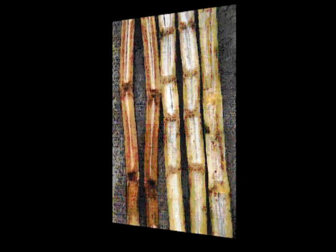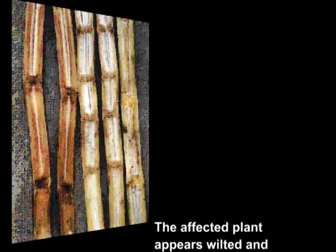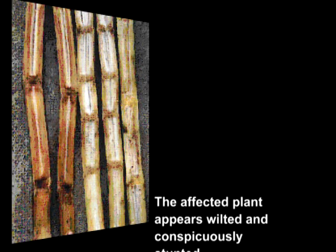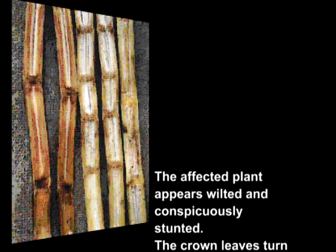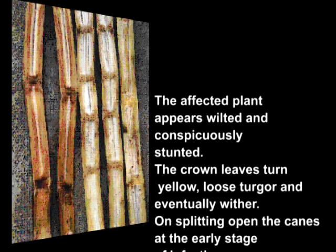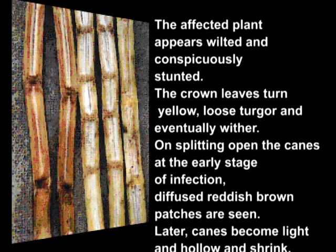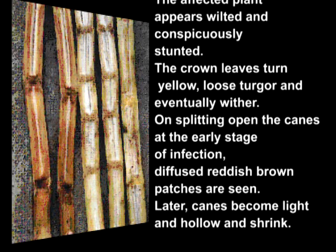Wilt disease of sugarcane is caused by Cephalosporium sacchariae or Fusarium moniliforme. The affected plant appears wilted and conspicuously stunted. The crown leaves turn yellow, lose turgidity, and eventually wither. On splitting open the canes at the early stage of infection, diffused reddish-brown patches are seen.